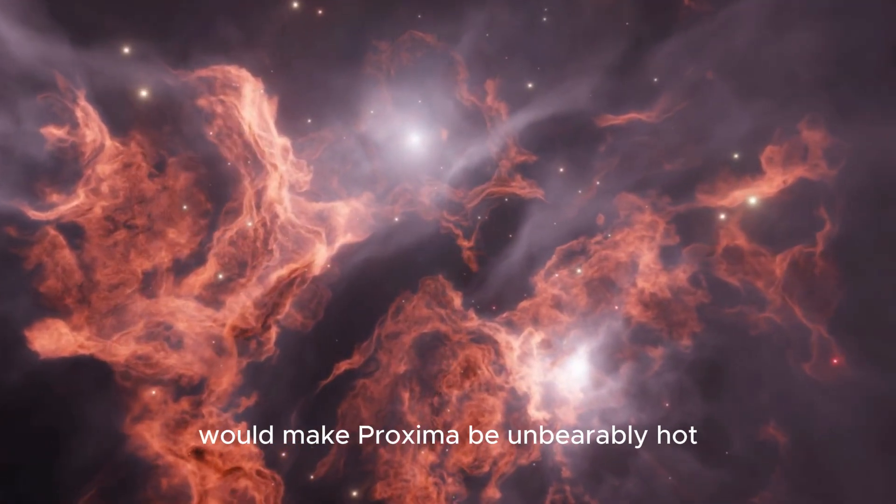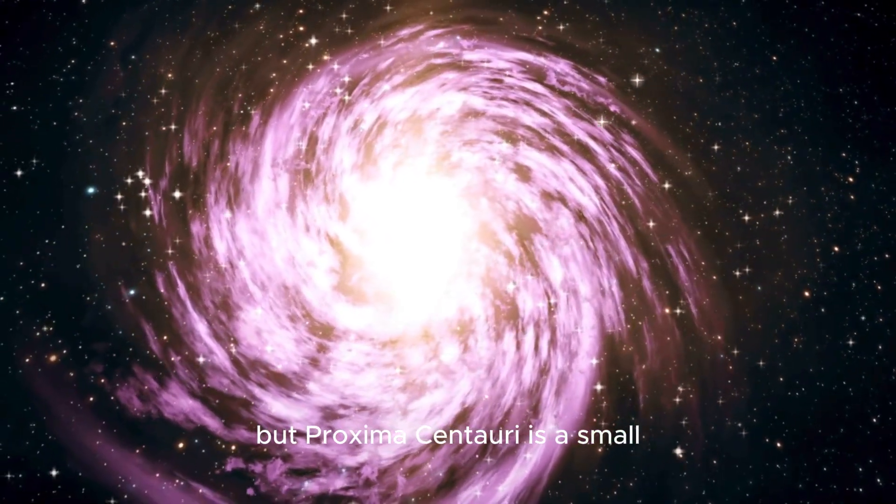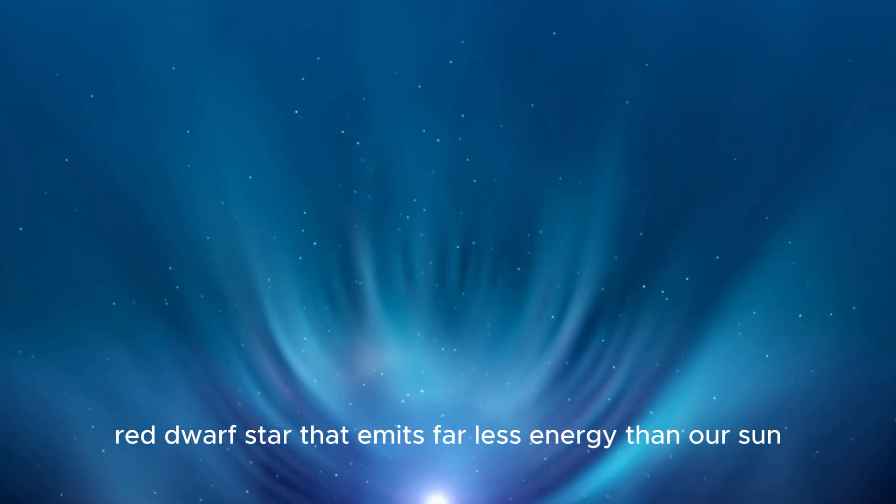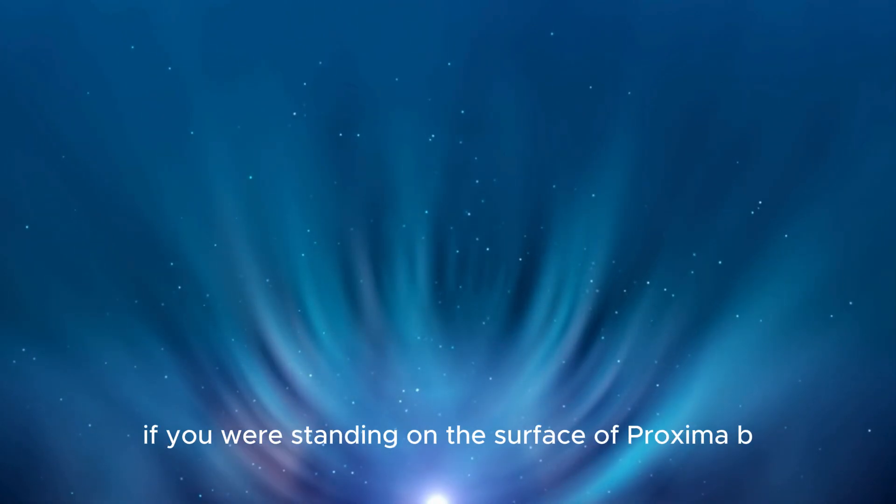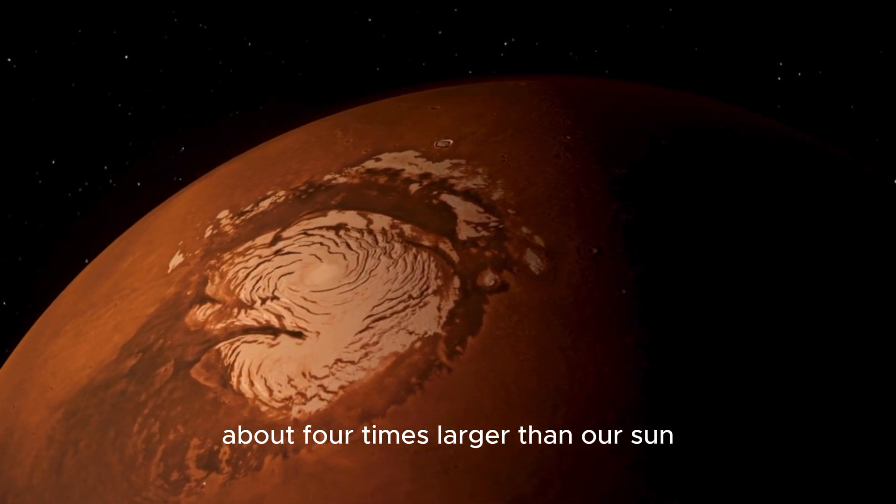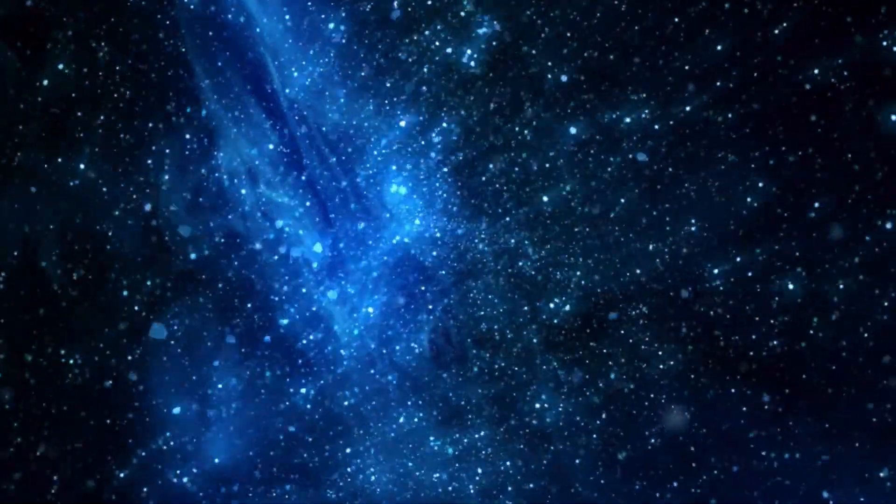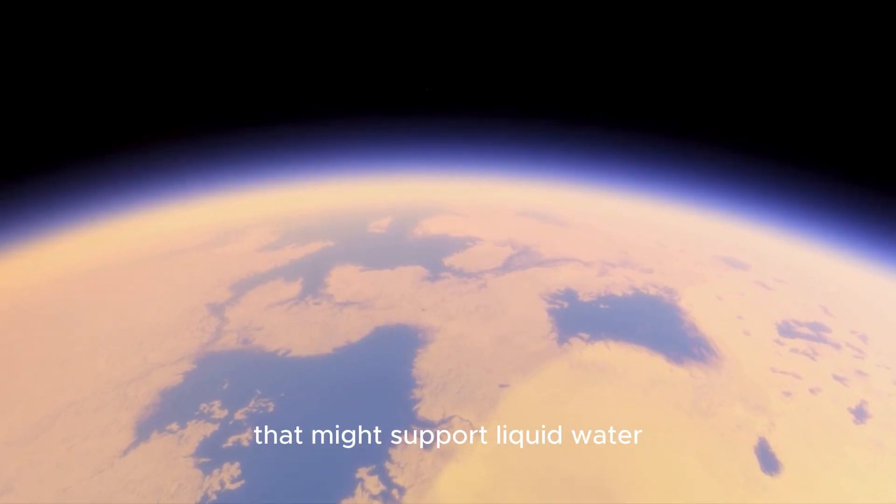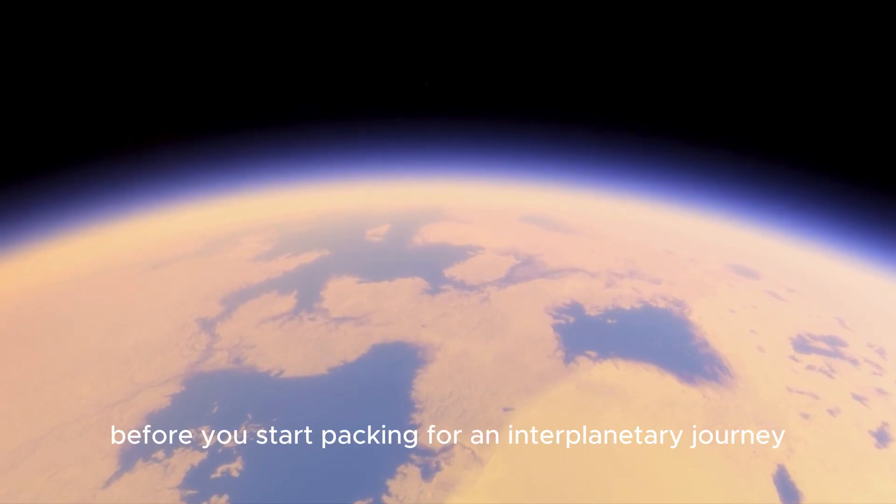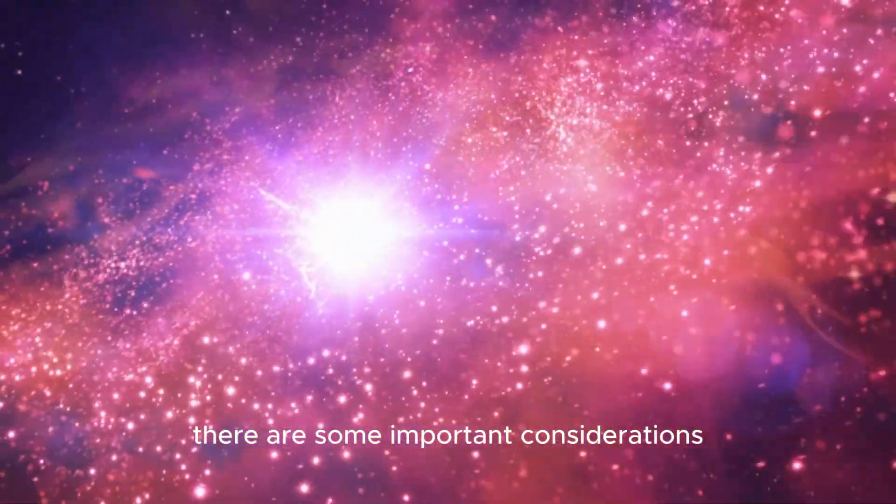You might think that such a close orbit would make Proxima b unbearably hot, but Proxima Centauri is a small red dwarf star that emits far less energy than our sun. If you were standing on the surface of Proxima b, you would see Proxima Centauri as a dim red sphere, about 4 times larger than our sun. If the planet lies within its star's habitable zone, it could have conditions that might support liquid water. However, before you start packing for an interplanetary journey, there are some important considerations.